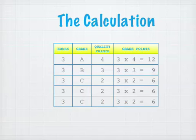Our last class, also a grade of C for two quality points, leaves us three credit hours times two quality points, giving us six grade points.